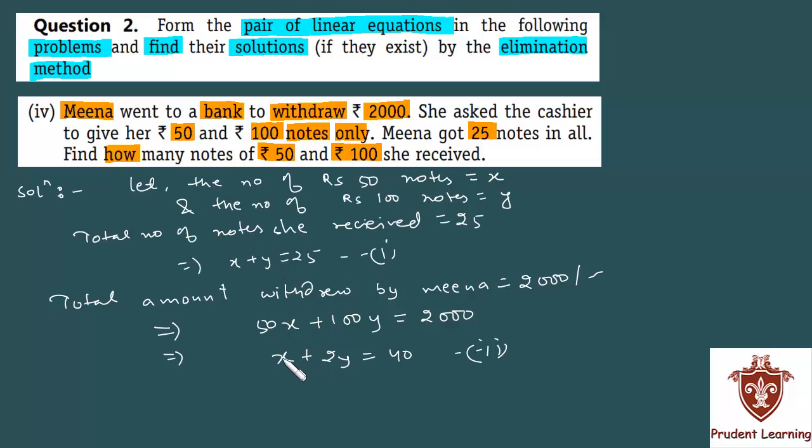So you have 2 equations and 2 variables. How will we solve them? By elimination method. I'll write the first equation below: x plus y equals 25.